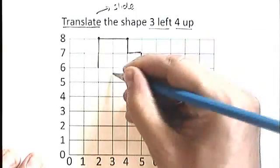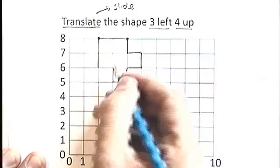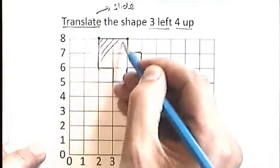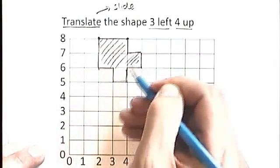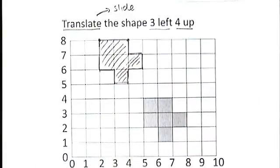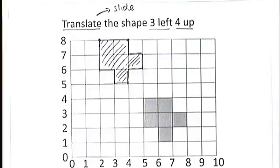Draw exactly the same shape as you had originally. We're not changing the size or the orientation of the shape. We are simply moving it, sliding it about on the page. And that is a translation, three units left and four units up.